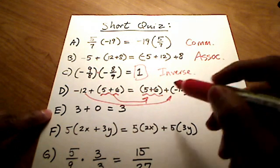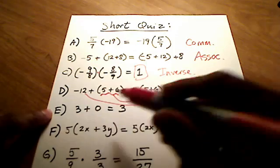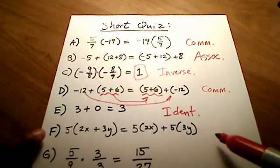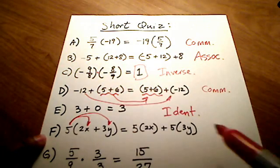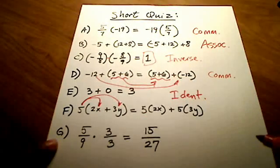The fifth one here, E, is the identity property. Okay, 3 is looking in the mirror and sees itself. F, let's see, F is the distributive property. We distributed 5 to both of these terms over here and came up with this stuff. And the last one, now this is probably the trickiest one of them all, but I'll end with this one.